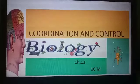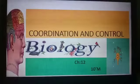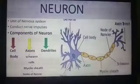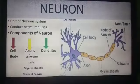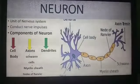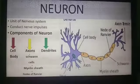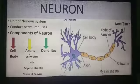Assalamu alaikum students. We have started a new chapter, that is coordination and control, and our today's topic is neurons. Neurons are the basic structural and functional unit of the nervous system. The human nervous system consists of billions of neurons.